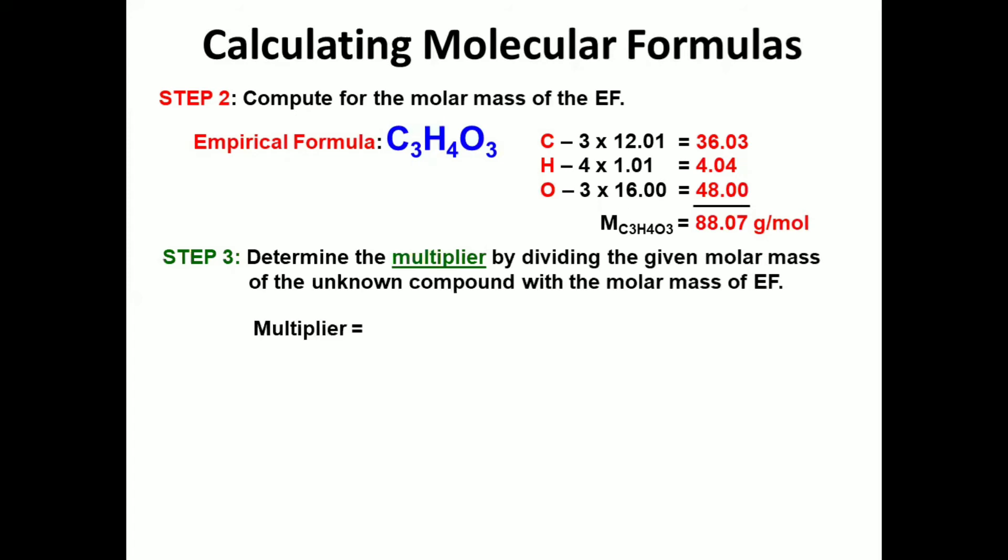In the problem, the given molar mass of the unknown compound is 176.14 grams per mole. So, we will divide it by 88.07 grams per mole, which is our empirical formula's molar mass.